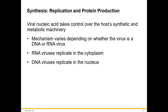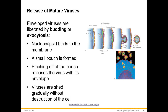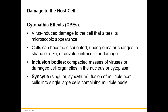Once virions have been synthesized and assembled, they're ready to be released. Enveloped viruses are released by budding or exocytosis: the nucleocapsid binds to the membrane, a small pinch forms, and pinching off releases the virus with its envelope — taking part of the host cell membrane with it. Here's an electron micrograph showing viral particles budding off the surface of the host cell.